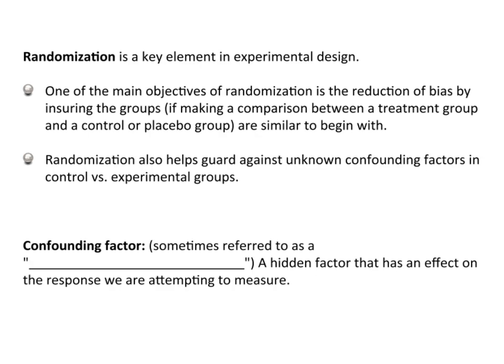Randomization is a key element in experimental design — it's extremely important. One of the main objectives of randomization is a reduction of bias by ensuring that the groups, assuming we're making a comparison between a treatment group and a control group, or a treatment and a placebo group, are similar to begin with. The key here is that it helps to ensure — it's no guarantee.